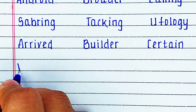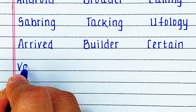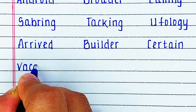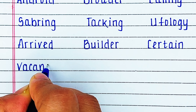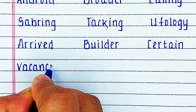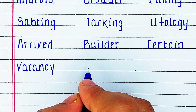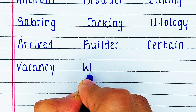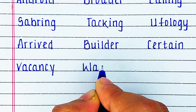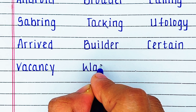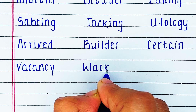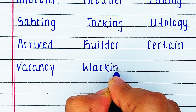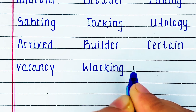Next is Alphabet V. The word is V A C A N C Y, vacancy. Next is Alphabet W. The word is W A C K I N G, vacuum.